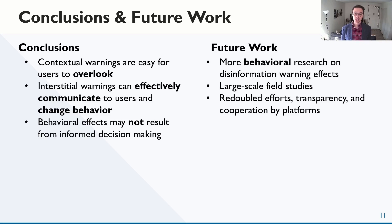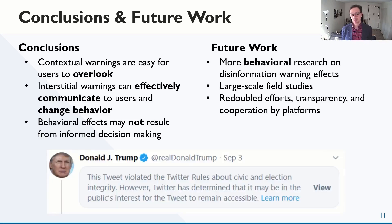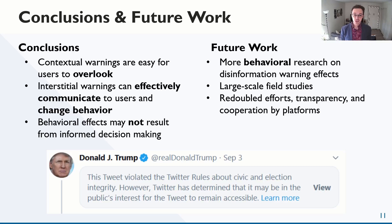Some platforms, like Twitter, are sparingly using interstitial warnings now, and this is a good first step, but there's much more that platforms can do. They should release data, conduct internal evaluations, and collaborate with researchers to enable field studies. These are the strategies that worked when browser vendors needed to develop effective security warnings, and they can also help platforms advance their capacity to counter disinformation with warnings.